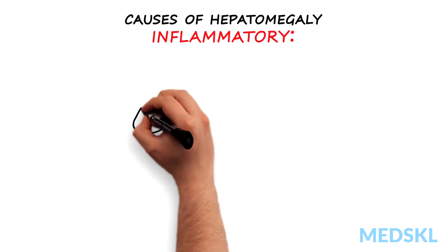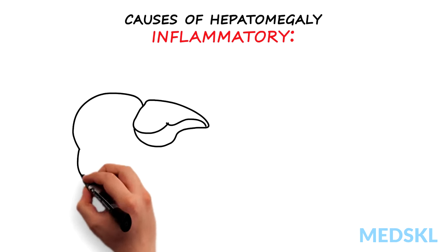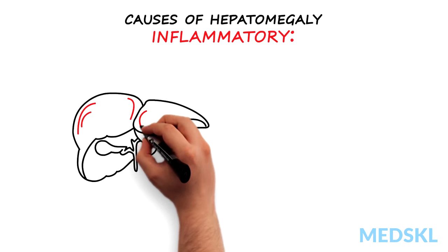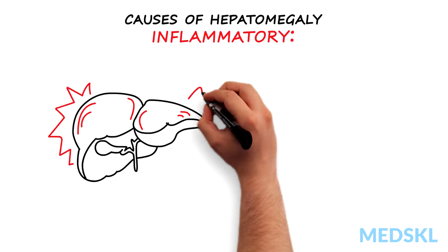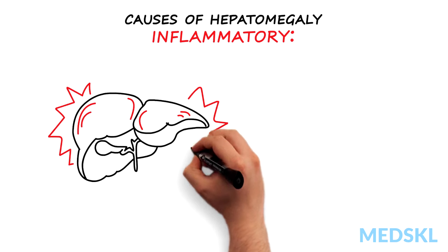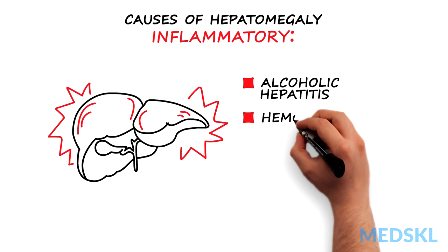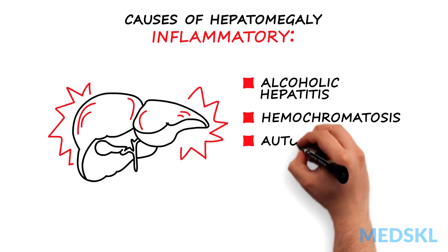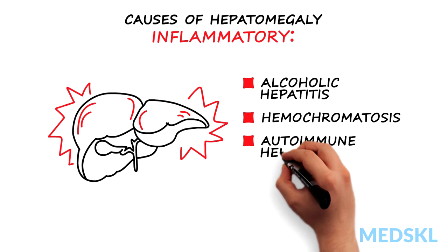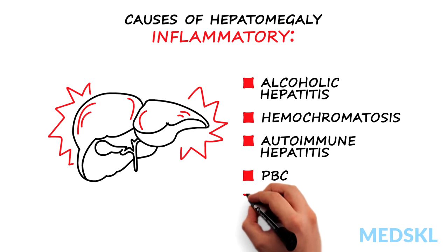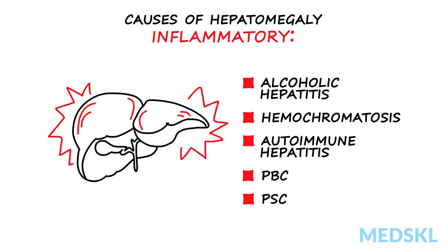Inflammatory: alcoholic hepatitis presents with liver enlargement and other signs of liver failure. Other non-infectious causes of chronic liver disease, including hemochromatosis, autoimmune hepatitis, primary biliary cholangitis, and primary sclerosing cholangitis, can also cause hepatomegaly.